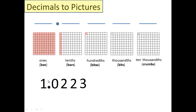Let's try a more difficult one: 1.0223, or the way mathematicians say it, 1 and 223 ten-thousandths. Like last time, let's label underneath. What's going to go underneath the 1? Underneath the 0? Underneath the 2? Underneath the other 2? And then finally the smallest of them all — crumbs is right. So this decimal has all of these things. We'll start off from the left with the box.